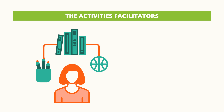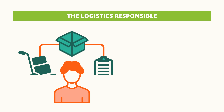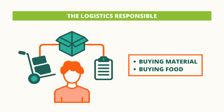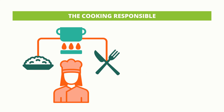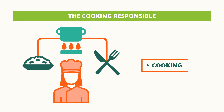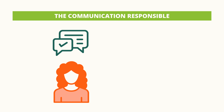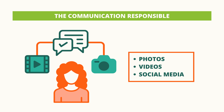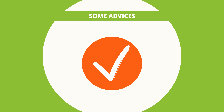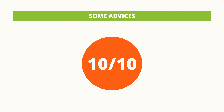The logistics responsible is in charge of buying the materials or food needed. The cooking responsible is in charge of cooking or helping the cooker. The communication responsible is in charge of taking videos and photos and sharing the project on social media. Before concluding, some advice to create a 10 out of 10 project.